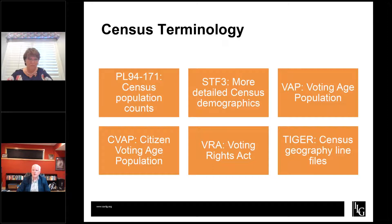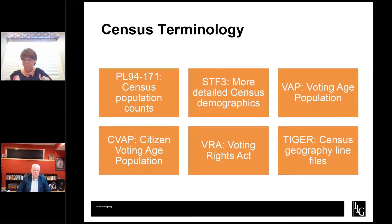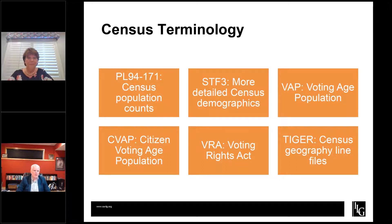I wanted to close by talking about a little bit of census terminology, since I've tossed around a lot of these terms. One you'll hear a lot is PL data, or PL 94-171 — named after the public law that established the release of census data for redistricting. Basically all that is, is the term for the official population data used in redistricting. That's what we're waiting to come out in September — the total population counts.